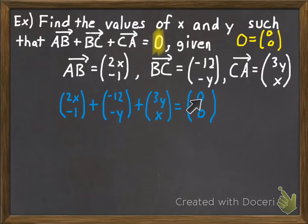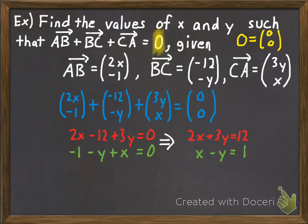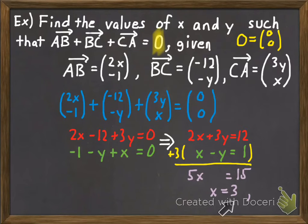When you add the horizontal components they equal zero, and when you add the vertical components they also equal zero — but each equation contains both x and y, so you're solving a system of equations. Set up equations from the horizontal and vertical components, then use elimination: multiply the bottom equation by three and add the equations together to get x, then plug back in to find y. That's how you find the sum or difference of two vectors.